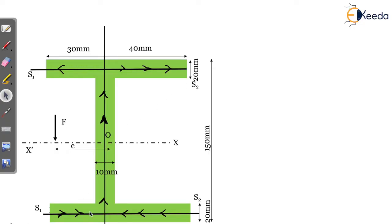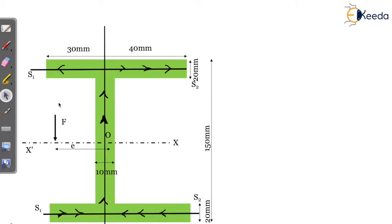S1 and S2 — observe the directions. The load is acting at a distance e, which is what we need to find. For S1, the shear flow is in the anti-clockwise direction, and for S2 it is in the clockwise direction. The web thickness is 10 mm, flange thickness is 20 mm, and the overall height of the I-section is 150 mm.